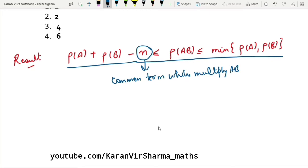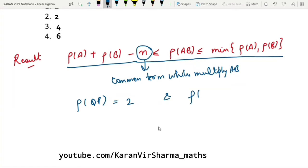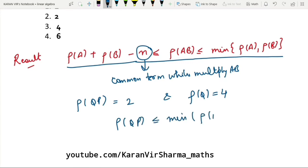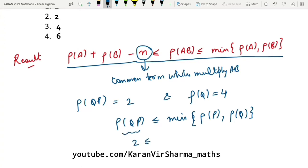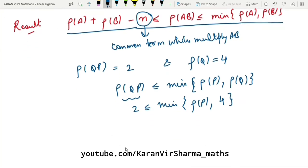First we use this result. We are given in the question that rank of QP is 2 and rank of Q is 4. So rank of QP will be less than equal to minimum of rank of P, rank of Q. Just substitute the values: 2 is less than equal to minimum of rank of P comma 4. So this implies that rank of P would be greater than or equal to 2. Let it be equation 1.